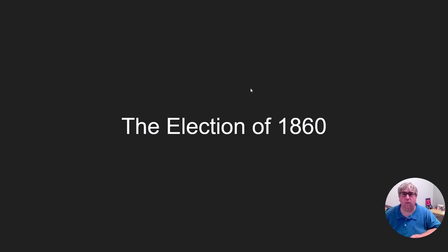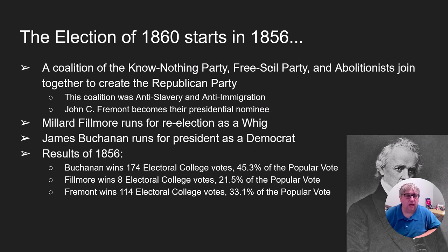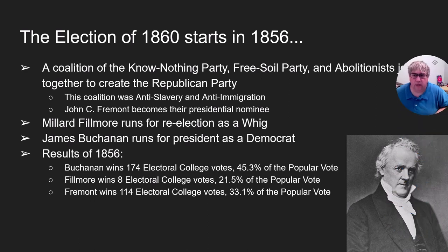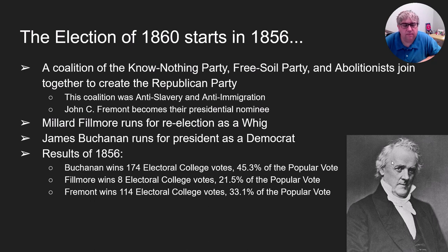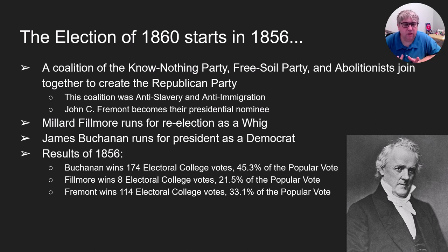When we get to 1856, slavery becomes the number one issue in politics and we get a new political party. The Know Nothing Party — anti-Catholic and anti-immigration — together with the Free Soil Party and radical abolitionists join to create what is today's Republican Party. John C. Frémont, famous for creating the California Trail, becomes their first presidential nominee. The sitting president Millard Fillmore runs for re-election with the Whig Party, and James Buchanan is the Democratic candidate. Fillmore suffers one of the worst defeats for a sitting president in history, getting only eight electoral college votes. Frémont — a brand new Republican nominee — gets 114 electoral college votes and a full 33% of the popular vote.